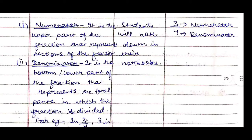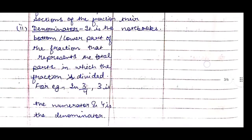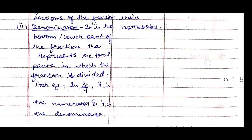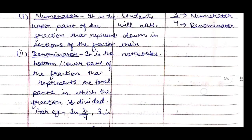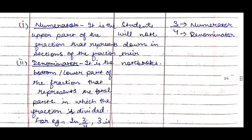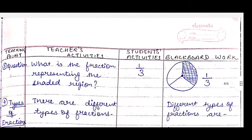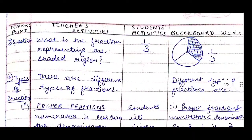Students will note down in their notebooks. We will give an example and write it on the board: in 3/4, three is the numerator and four is the denominator. We write 3/4 on the board and label it — three is numerator and four is denominator.